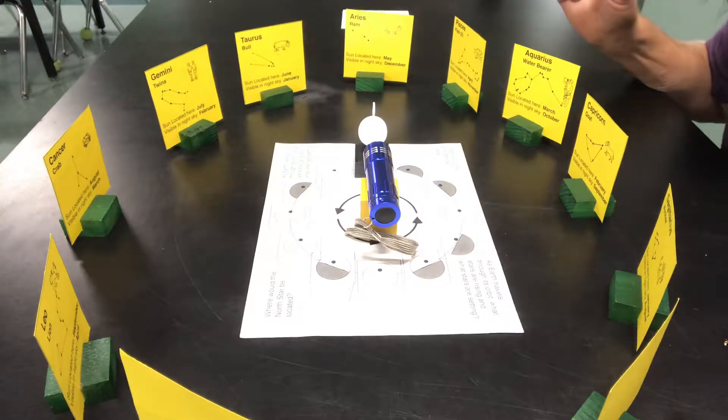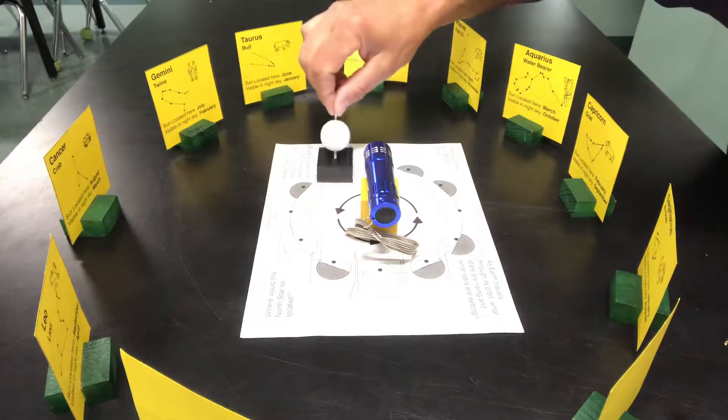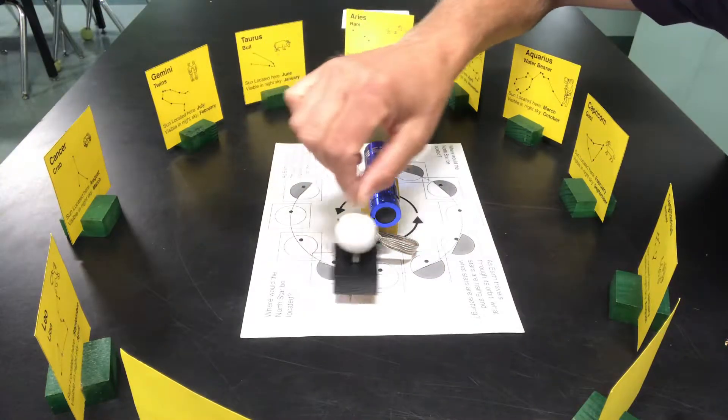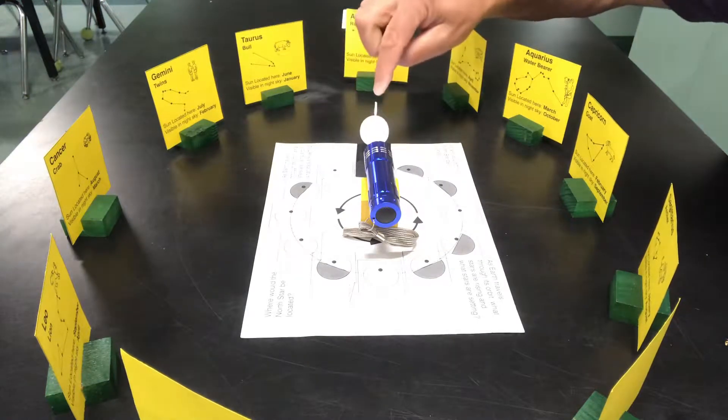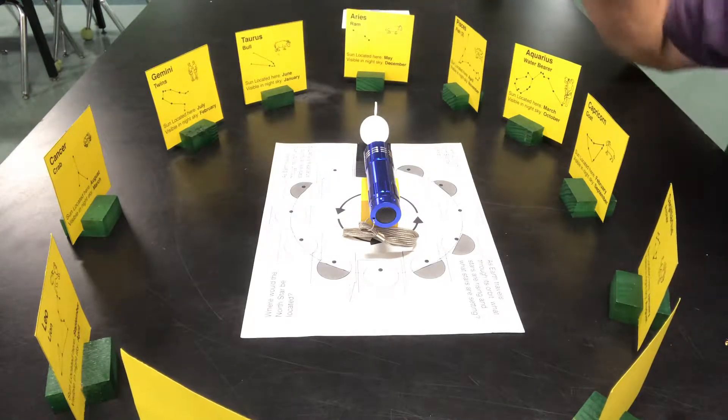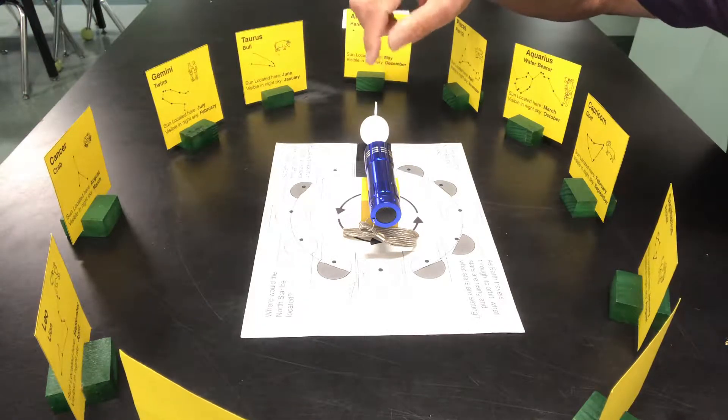So before we go through the constellations, there's a couple of things that I want to go over. Number one, as the Earth revolves around the sun, its North Pole is tilted and pointing toward the North Star. The Earth wobbles a bit, but it's pretty much pointing towards the North Star.